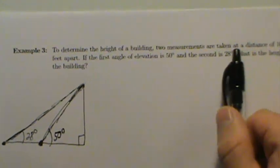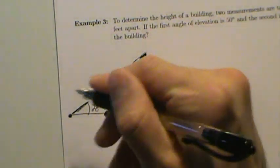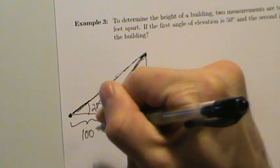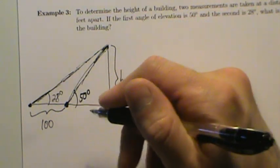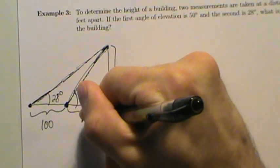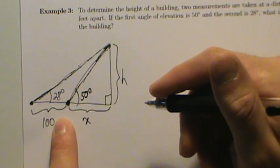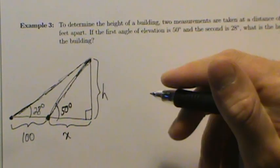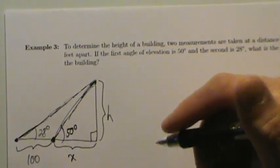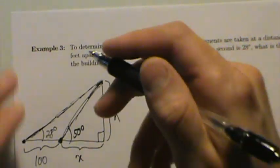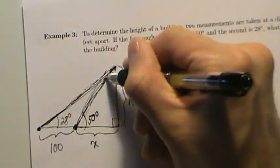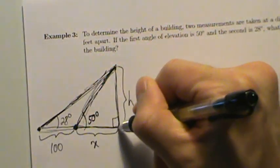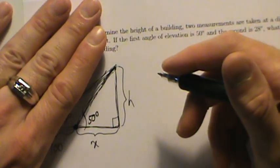The two measurements are 100 feet apart. We want to find the height of the building, which we'll call H. We'll also call the unknown horizontal distance from the building to the first (closer) measurement point X, since we don't know how far away it was taken. Now, notice there are actually two right triangles here — a smaller one using the 50-degree angle and a larger one using the 28-degree angle — and we're going to use both with the tangent function.